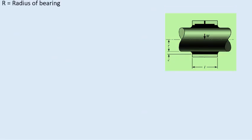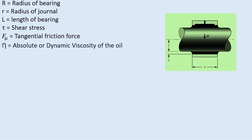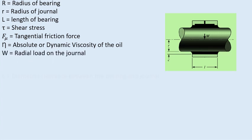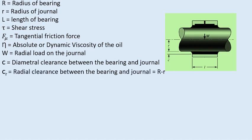In the terminology: capital R is the radius of the bearing, small r is the radius of the journal, L is the length of the bearing, tau is the shear stress in the oil, and F_mu is the tangential friction force generated in the oil. Eta is the absolute or dynamic viscosity in Pascal-seconds, w is the radial load acting on the journal, c is the diametral clearance, and cr is the radial clearance given by capital R minus small r.